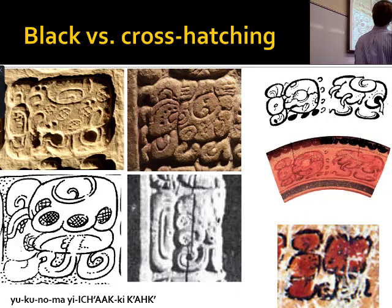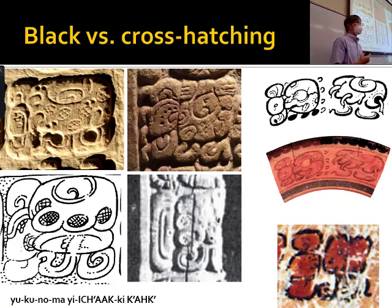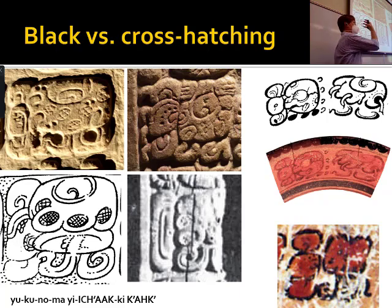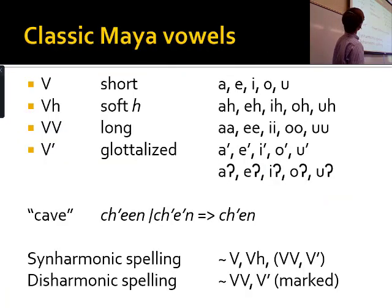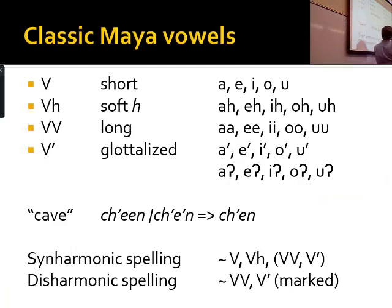This is another sign which is 'ma' — it's also just black blobs, and when they're carved they're cross-hatched. That's just a very basic convention of Maya writing: when it's incised or carved there's no way to show blackness, so you use cross-hatch.